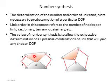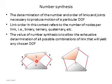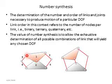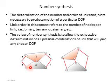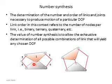Link number 1 and 2 are called ternary links because they have 3 nodes. There are 3 nodes in link number 1 and 3 nodes in link number 2. So these links are called ternary links, whereas link number 3 which are the bar links.